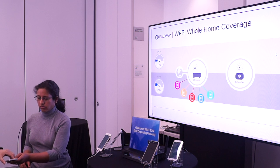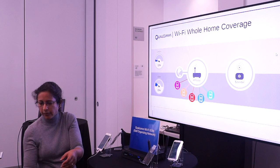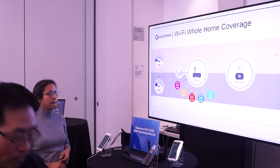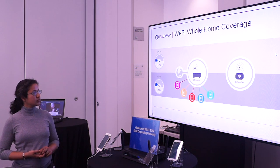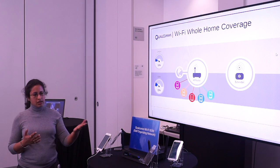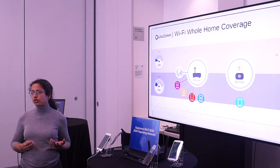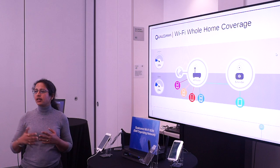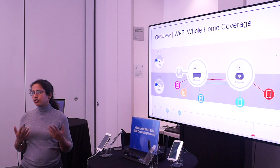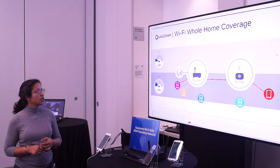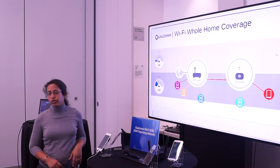Next, I will move this phone out to the range extender — you will see they will move it to the extender. The access points work with the phones; they ask the phones to do measurements, and then they will send a request to steer it to the other access point. But the devices can refuse to move. We did see that the two phones moved to the range extender.